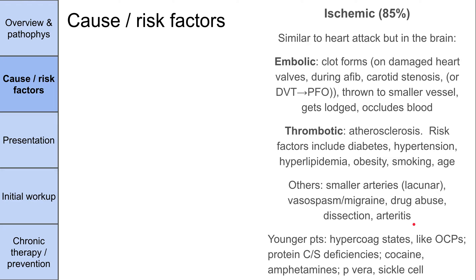In younger patients who get strokes, the risk factors are more like hypercoagulable states — patients who use oral contraceptive pills, people with deficiencies in protein C and S, people who use cocaine or amphetamines, patients with polycythemia vera, and patients with sickle cell disease. So if you have a younger patient presenting with a stroke, you might want to look into these as potential causes.